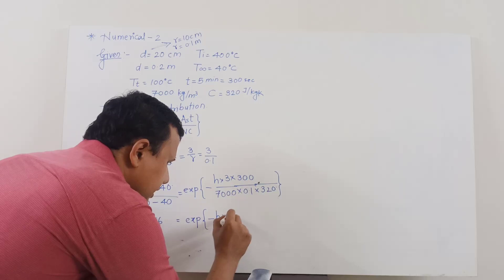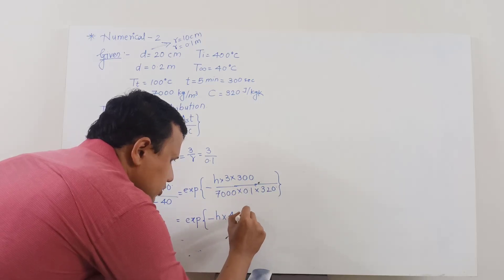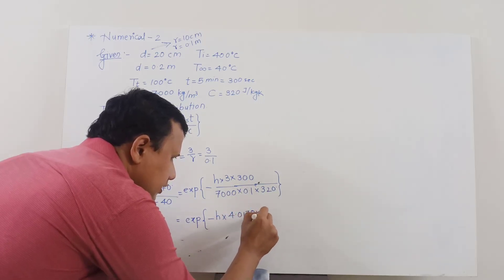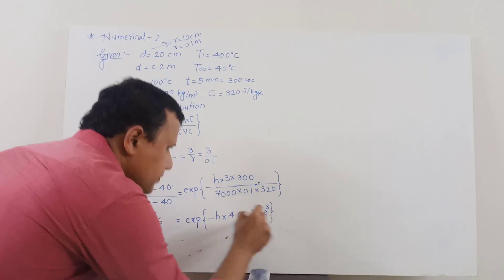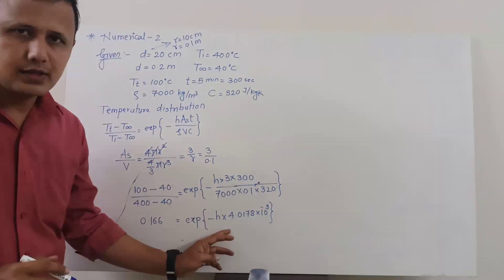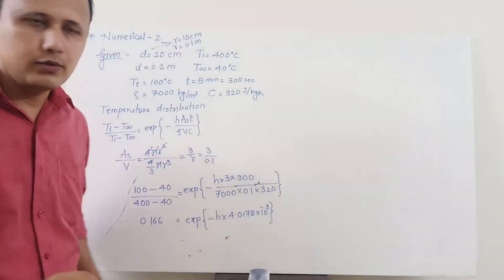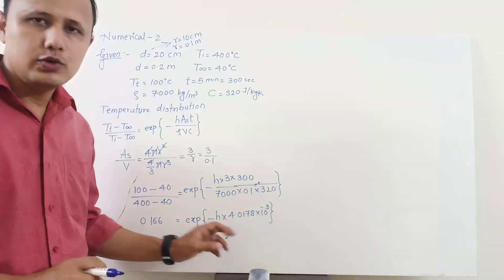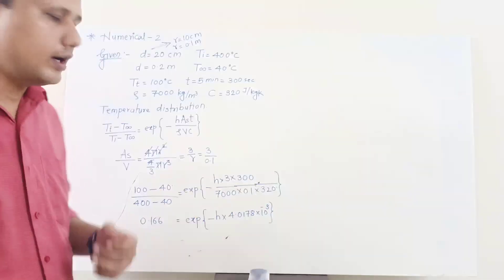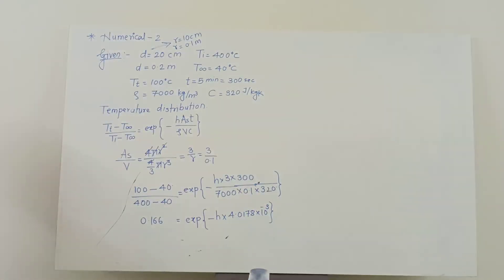So this will be exponential of minus h multiplied by 4.0178 into 10 raise to minus 3. Actually no need to go for this step if you are good at using your calculator, I am just providing it to you for the confirmation of your answer.